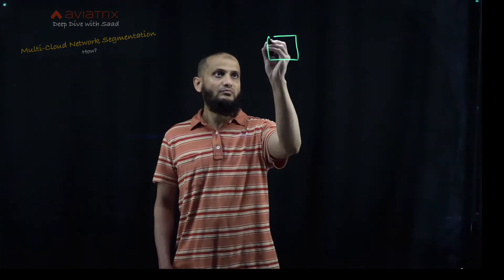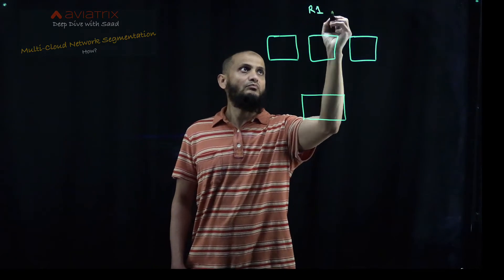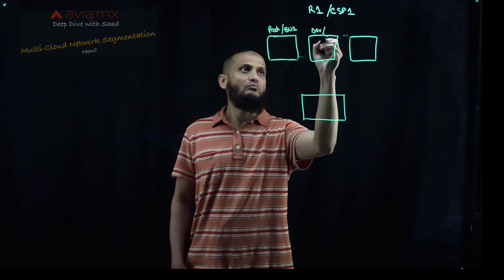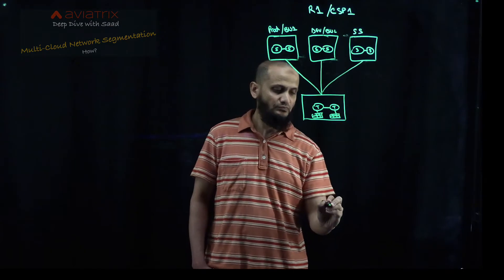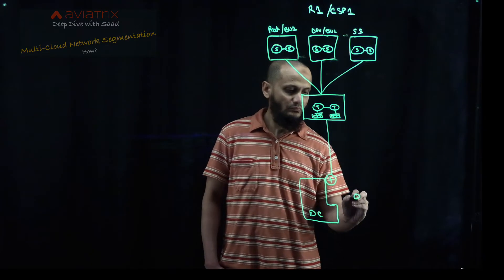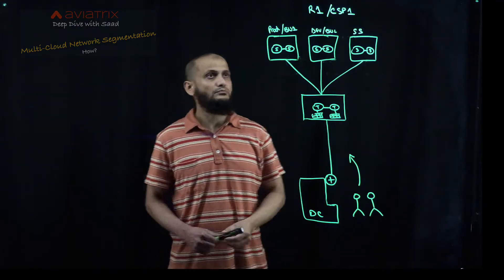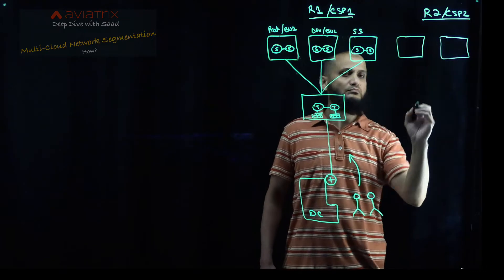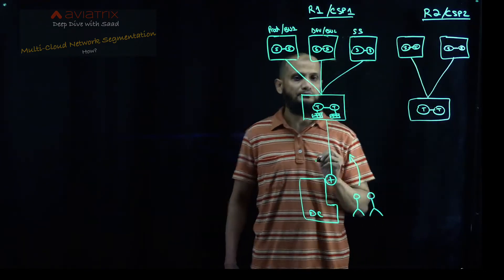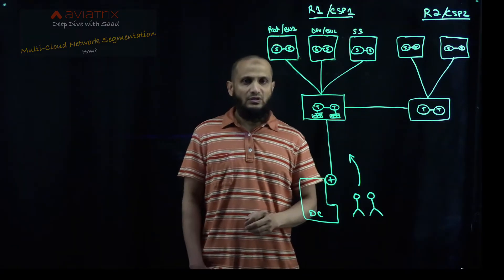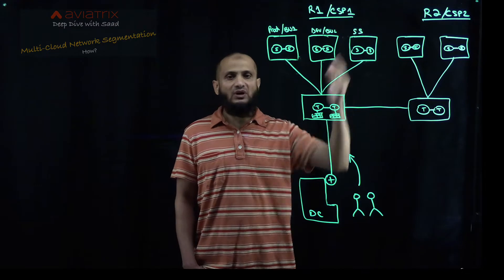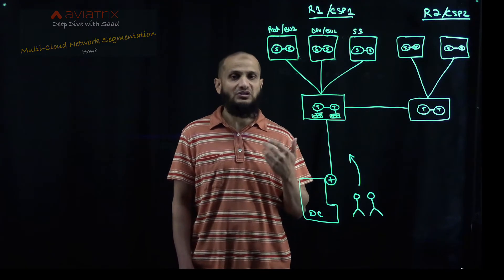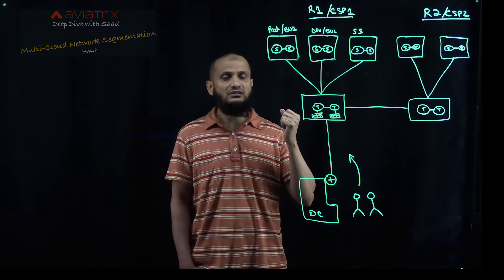Let's understand this by drawing a multi-cloud network architecture. So if we take a look at the architecture then we can see this could be a region one of CSP1. CSP1 could be your AWS, Azure, OCI, GCP, Alibaba. It could be anything. So I'm just writing CSP1 in this scenario.